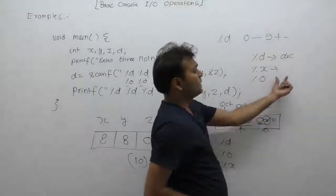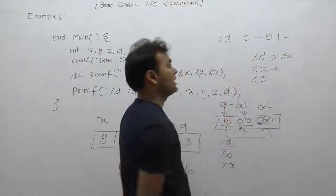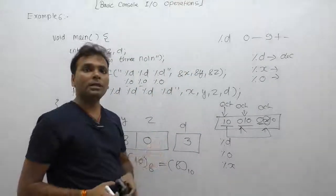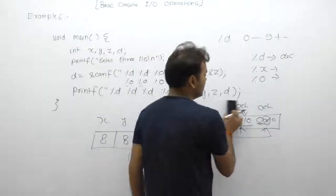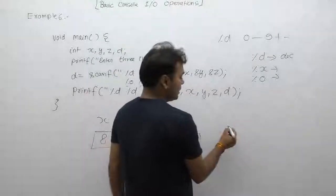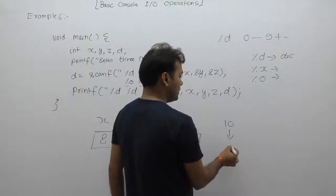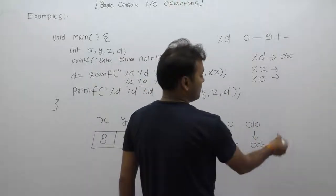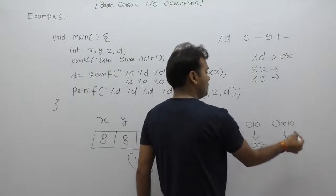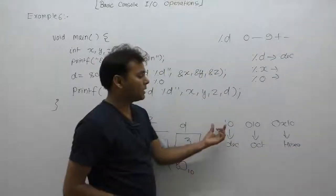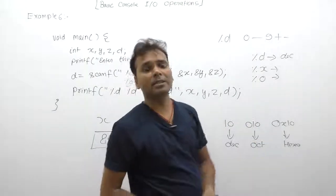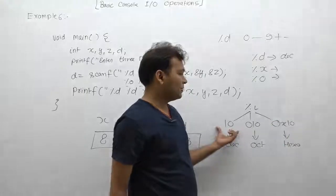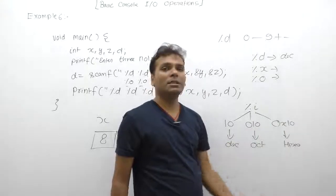Finally, a comparison of %d, %x, %o: with %d at runtime, only decimal input can be supplied. With %x, numbers are interpreted as hexadecimal. With %o, numbers are interpreted as octal. But if you want to supply values in different formats at runtime - if a number has no prefix it is decimal, if it starts with zero it is octal, if it starts with 0x it is hexadecimal - then the suitable modifier is %i (percent i). With %i, runtime inputs can be entered in decimal number system, octal number system, or hexadecimal number system.